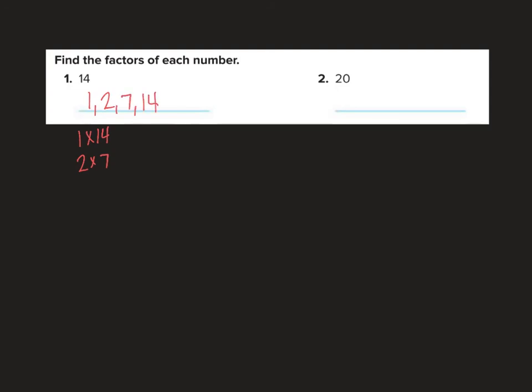Now 20, the factors. 1 times 20, 2 times 10. 3? Nope. That goes 21 and 18. 4. Yep. 4 times 5. 5, we've already got. 6, 7. Okay. That's all of them. So we have factors of 1, 2 - notice I'm ordering from least to greatest - 4, 5, 10, and 20. There we go. Factors of 20.